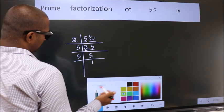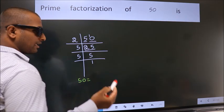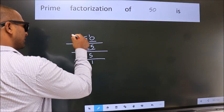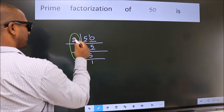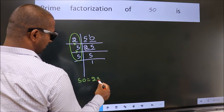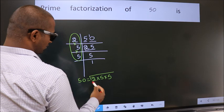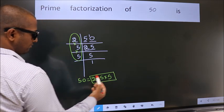Therefore, prime factorization of 50 is the product of these numbers. That is 2 into 5 into 5. This is called prime factorization of 50.